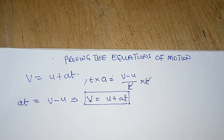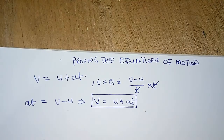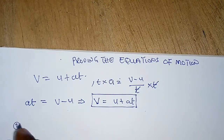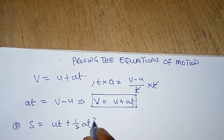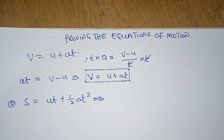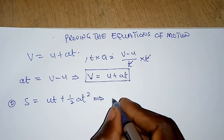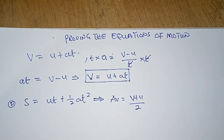Let's move on to the second equation of motion: S equals UT plus half AT squared. To prove this equation, we use the average velocity, which we know to be V plus U over 2. Average velocity means when we sum all the velocities together and divide by 2.